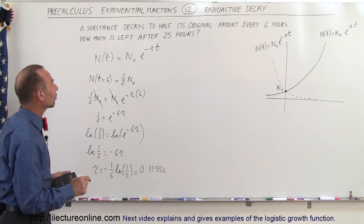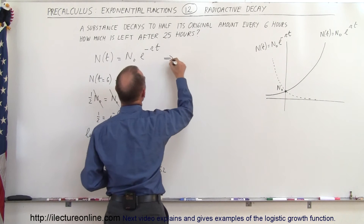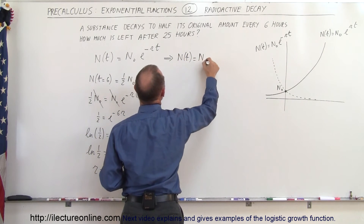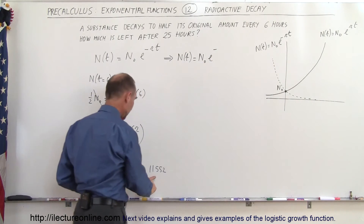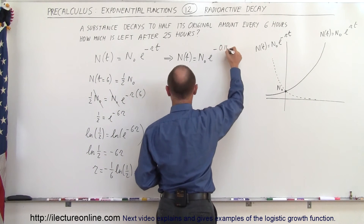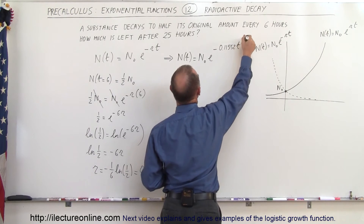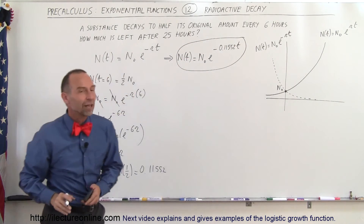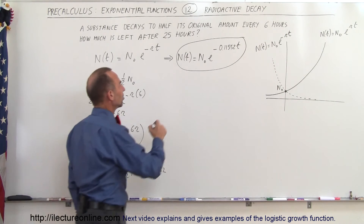Now let's plug r back into our original equation. The amount remaining as a function of time becomes N(t) = N₀ times e to the minus 0.115525 times t. This is the equation we use to find how much we have left after 25 hours.